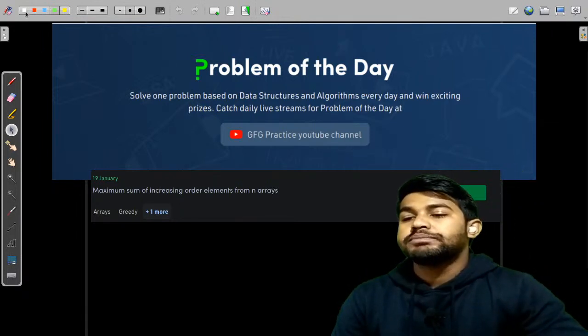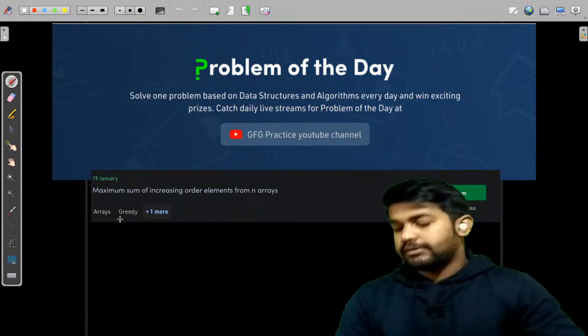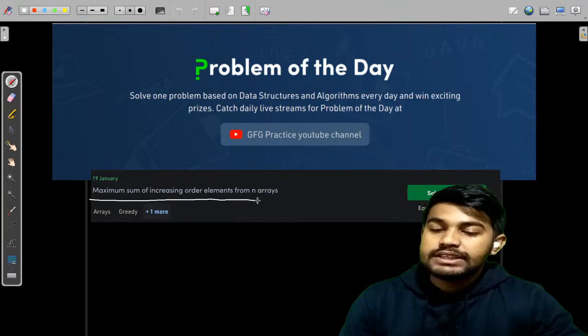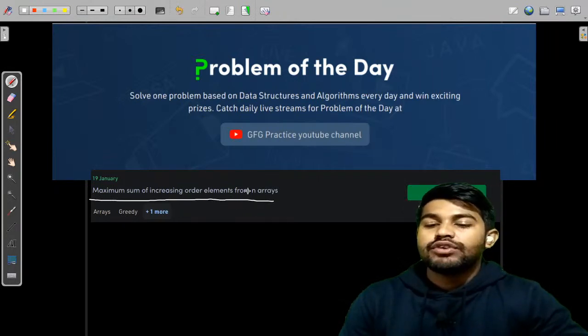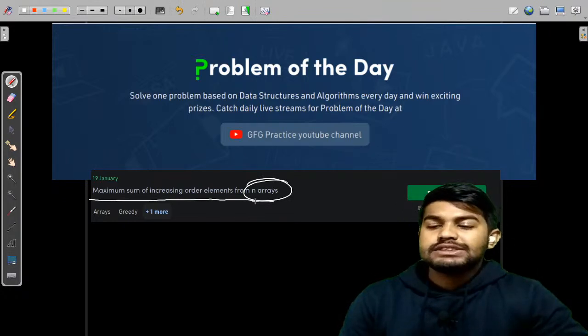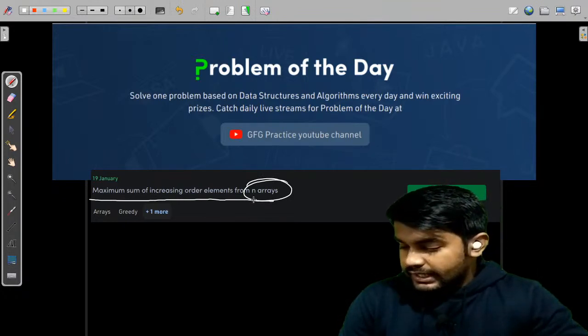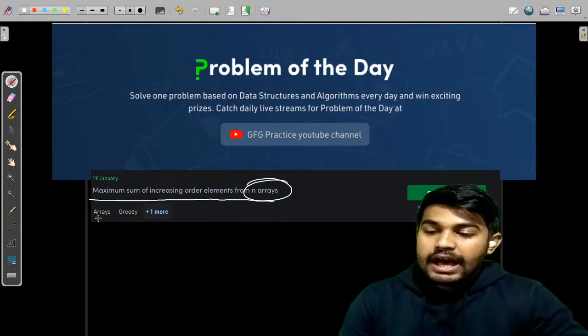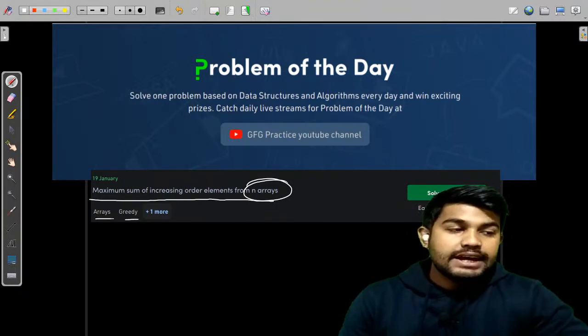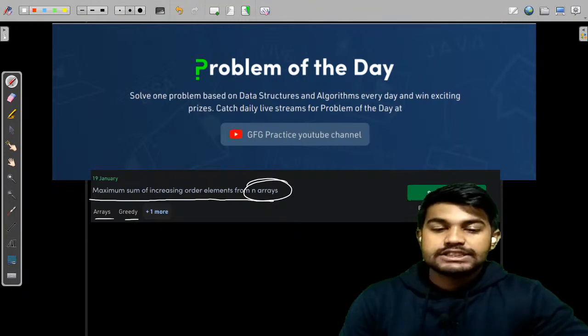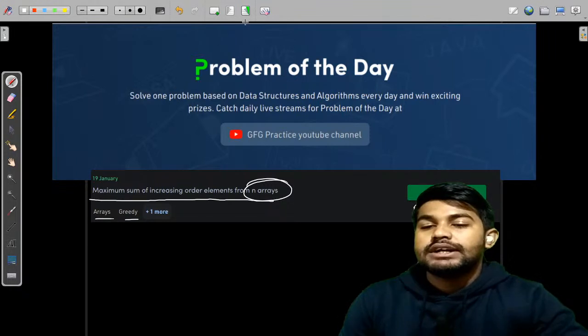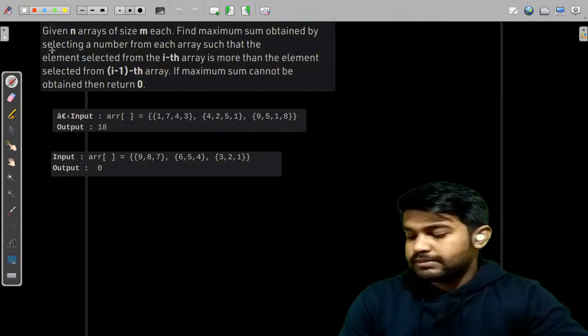Today we would be solving yesterday's problem of the day, that is maximum sum of increasing order elements from n arrays. The problem is quite clear from the name itself. This problem is related to arrays and it is a greedy problem. It has a success percentage of 72 percent and this is an easy level problem.